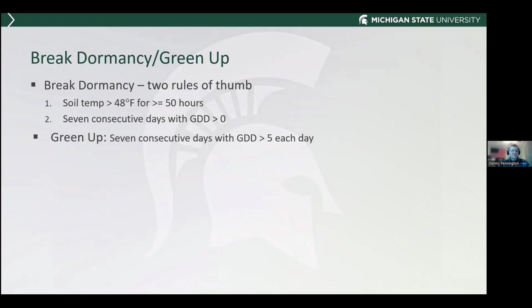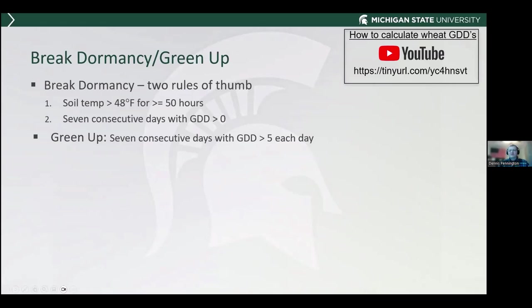Green-up needs a little bit more heat units. Breaking dormancy means the wheat plant is no longer dormant and is ready to start growing. Green-up requires seven consecutive days where the GDD on each day is at least five. I recorded a video on how to calculate wheat GDDs and how to access EnviroWeather — you can pull up your nearest weather station and download data or view it on screen.